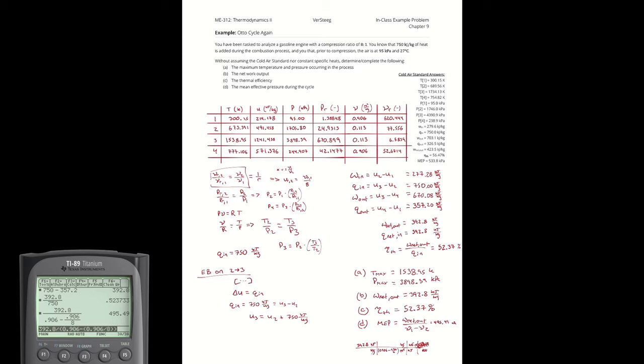As a general rule of thumb for all of the problems in chapter 9, I'm expecting you to be able to perform the analysis both with the cold air standard and without the cold air standard. There are advantages to both. The cold air standard is faster and it also simplifies very neatly, allowing us to make nice correlations. The non-cold air standard version is going to be more accurate generally speaking, but it's a slightly more accurate calculation from an inaccurate model. So the advantage to that extra accuracy is very dependent on the circumstances.